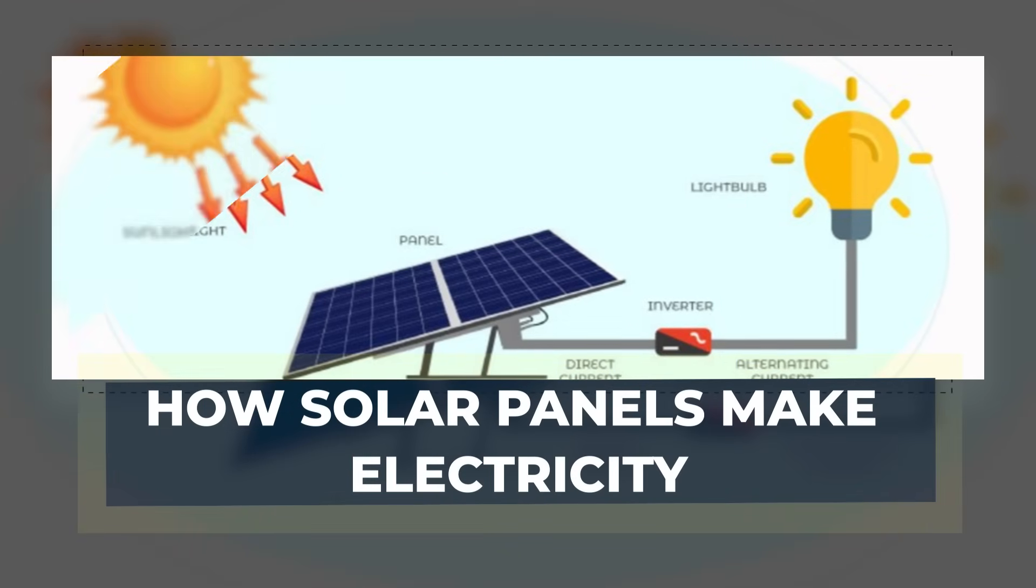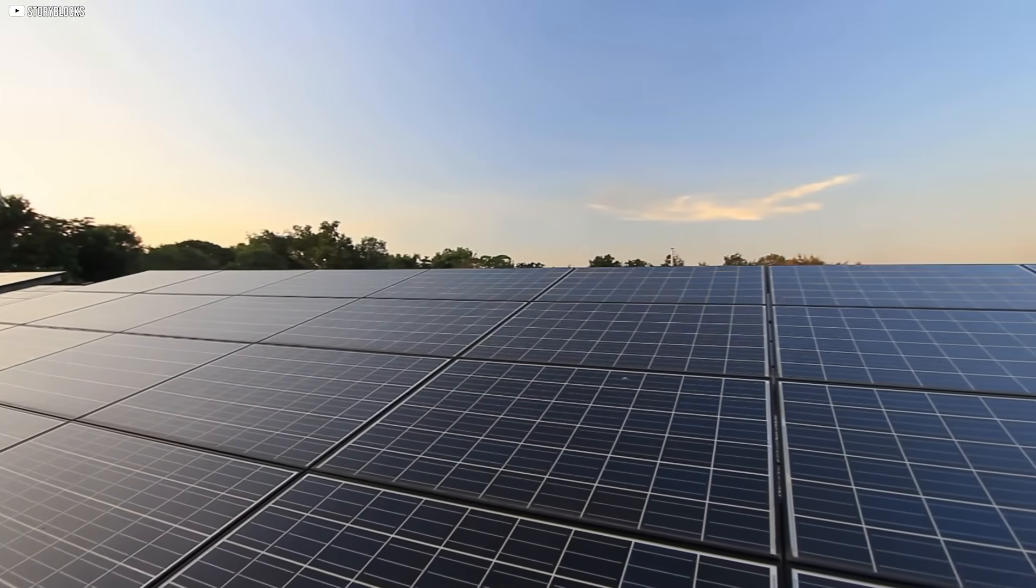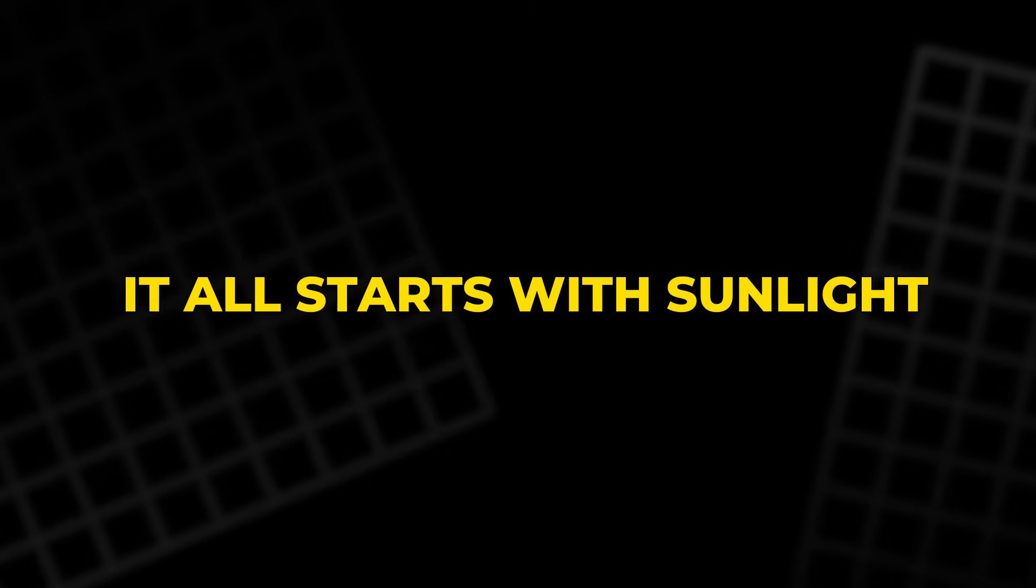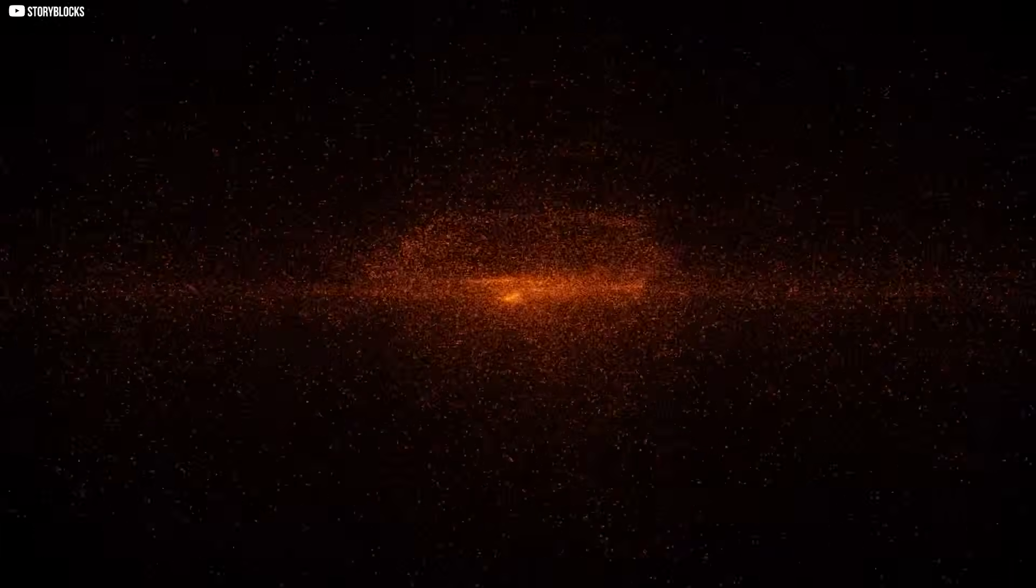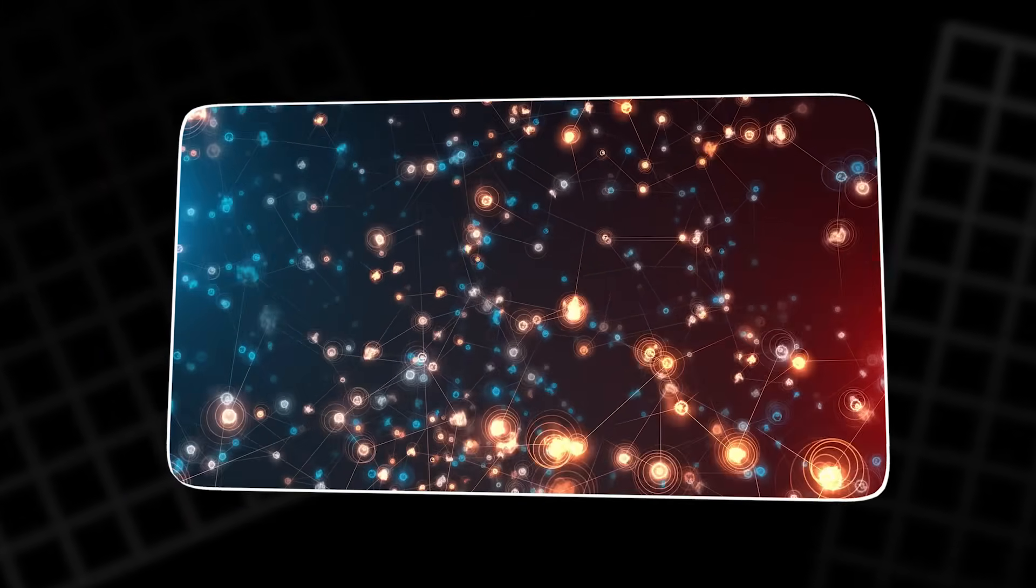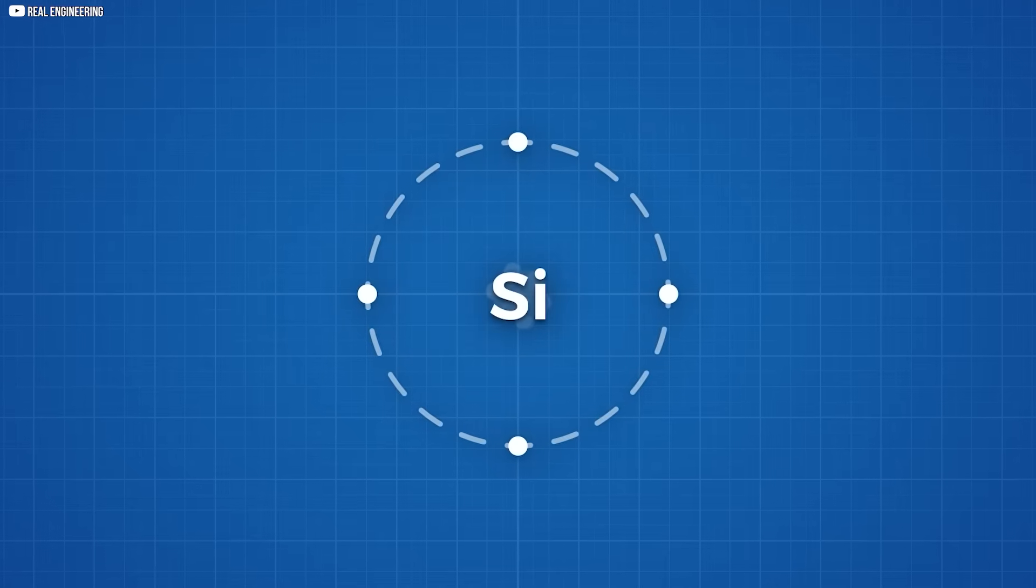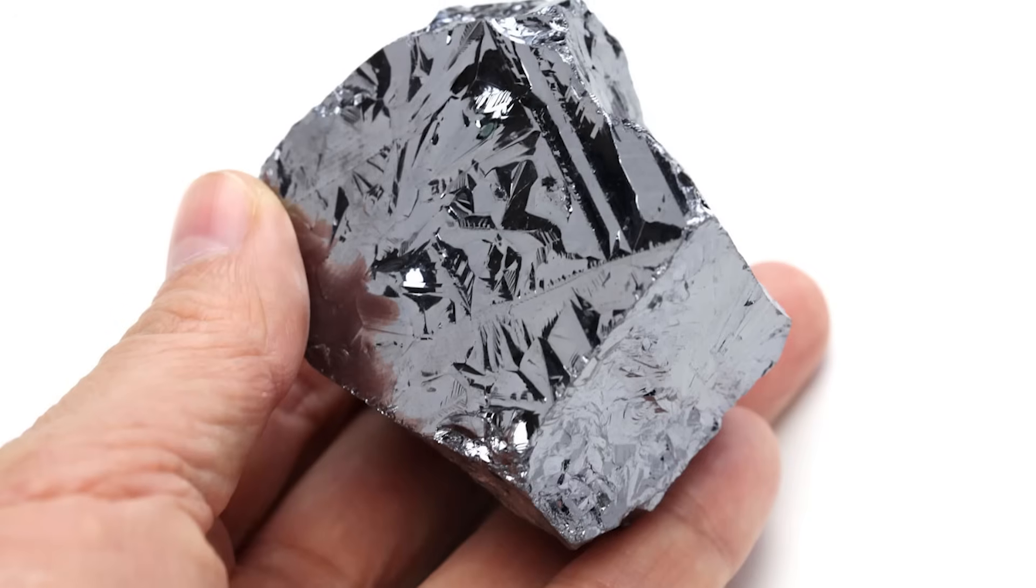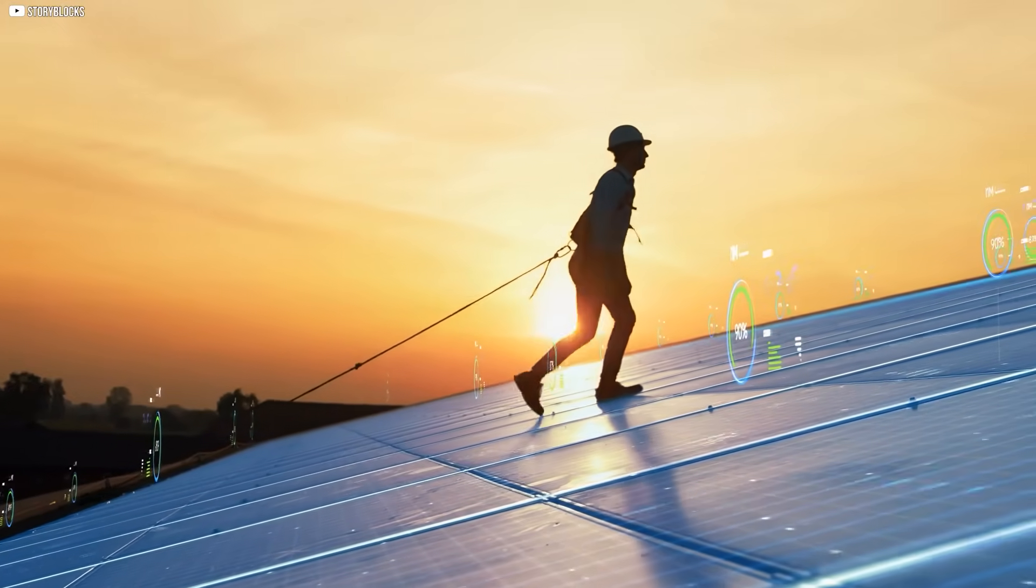How solar panels make electricity. At the heart of every solar panel is a simple yet powerful interaction between light and matter. It all starts with sunlight. An endless stream of tiny energy packets called photons. These photons aren't visible particles like dust. They're packets of energy, moving at the speed of light, each carrying enough power to nudge electrons inside certain materials. Silicon happens to be one of those materials. Its atomic structure makes it perfect for this job. But the raw silicon alone isn't enough. It needs a little tweaking to create the magic of electricity.